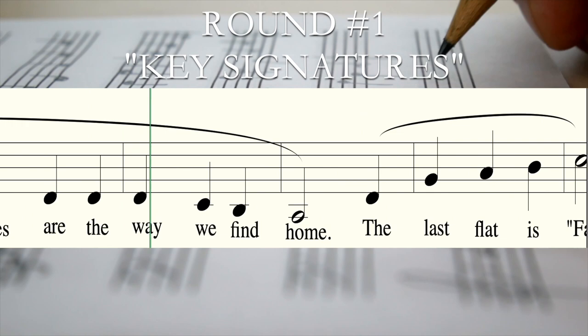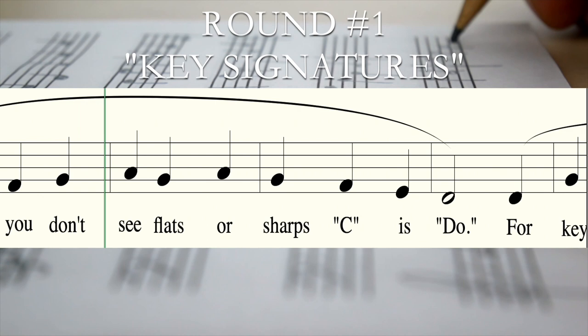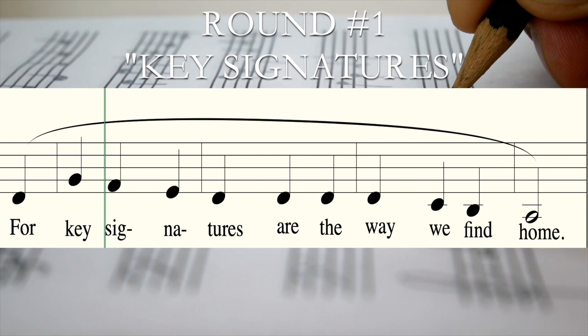All right, let's repeat it from the top. The last flat is Fah, the last sharp is Ti. And if you don't see flats or sharps, C is Do — for key signatures are the way we find Do.